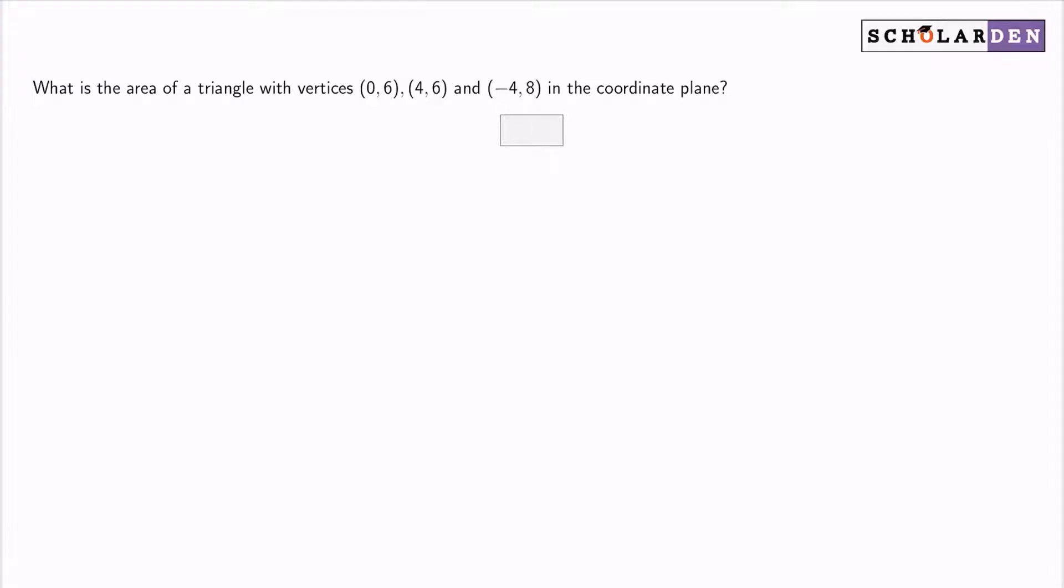Hey everyone, I hope you're doing okay so far. Let's go ahead and get to it. What is the area of a triangle with vertices (0,6), (4,6), and (-4,8) in the coordinate plane? The answer to this question is 4.